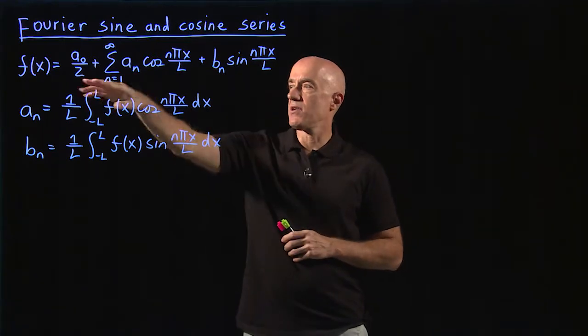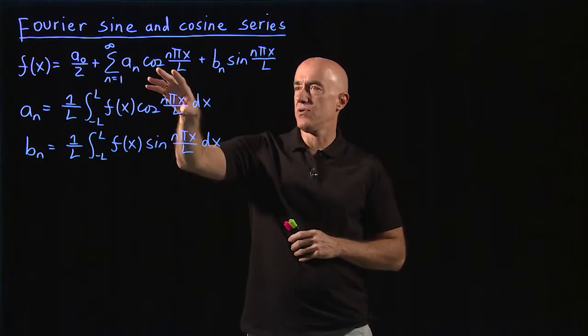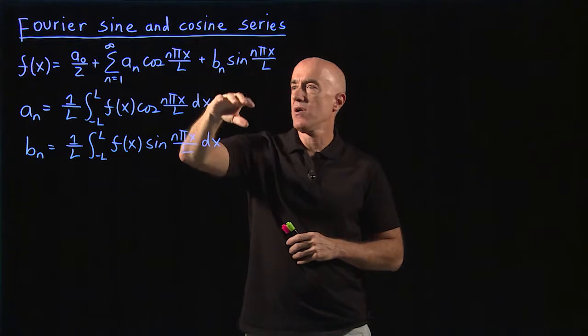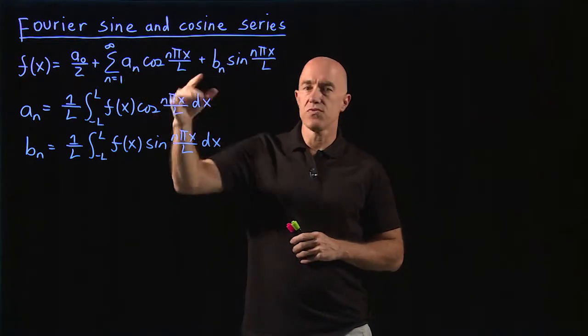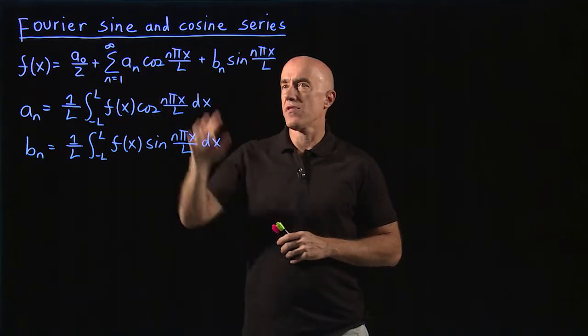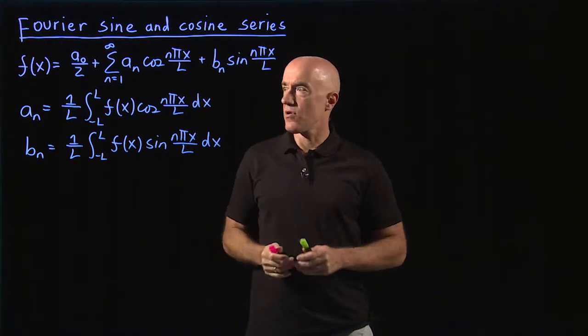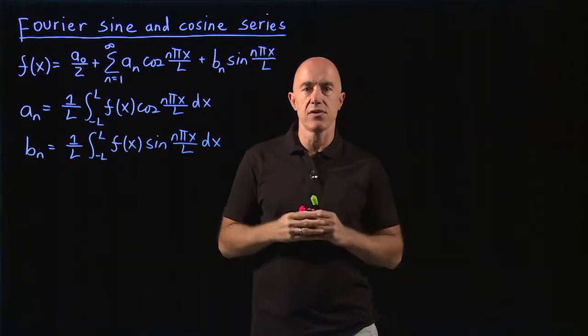Sometimes the function has some symmetry, which allows us to eliminate either the sine term or the cosine term in this series. Those resulting series are called the Fourier sine or the Fourier cosine series. So the symmetry has to do with whether the function is even or odd.